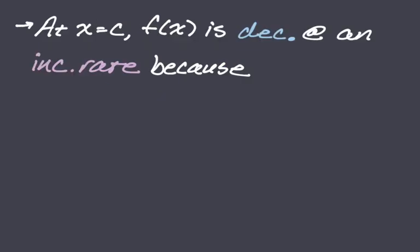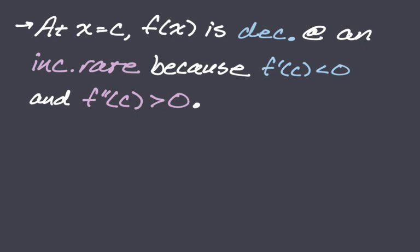At x equals c, f of x is decreasing at an increasing rate. The 'because' is always what's missing — without justification it's harder to make sense of. If our function is decreasing, that's a first derivative situation; f prime is less than zero. Decreasing at an increasing rate means the rate of change of the first derivative is positive, so f double prime is greater than zero. That's our justification: f prime less than zero, f double prime greater than zero.